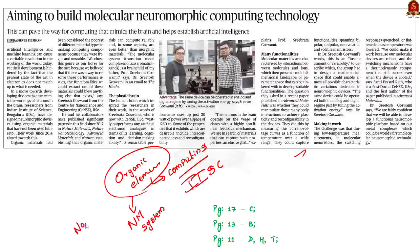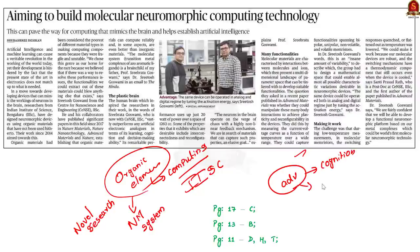This is a new and up-and-coming technology. According to the scientists, the advantages of using organic materials include improved cognition and decision-making ability. This is because of the high interconnectedness of organic systems. This is the crux of the news article. Through this discussion, we will see about the term neuromorphic computing and also its advantages and disadvantages.